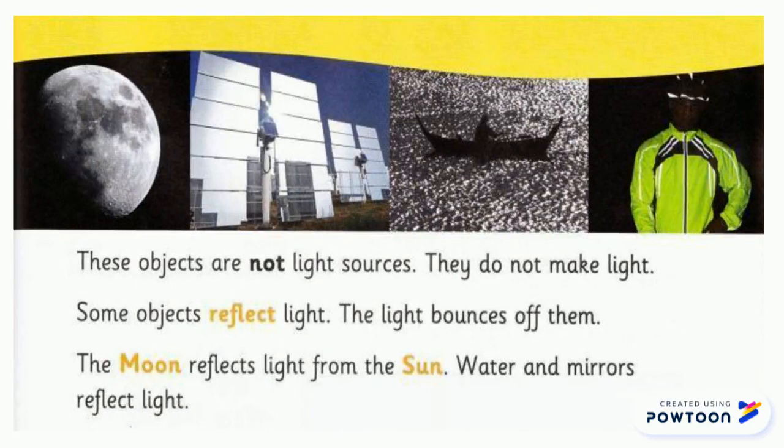These objects are not light sources. They do not make the light. Some objects reflect the light — the light bounces off them. The moon reflects the light from the sun. Water and mirrors reflect the light. They are called reflective materials.